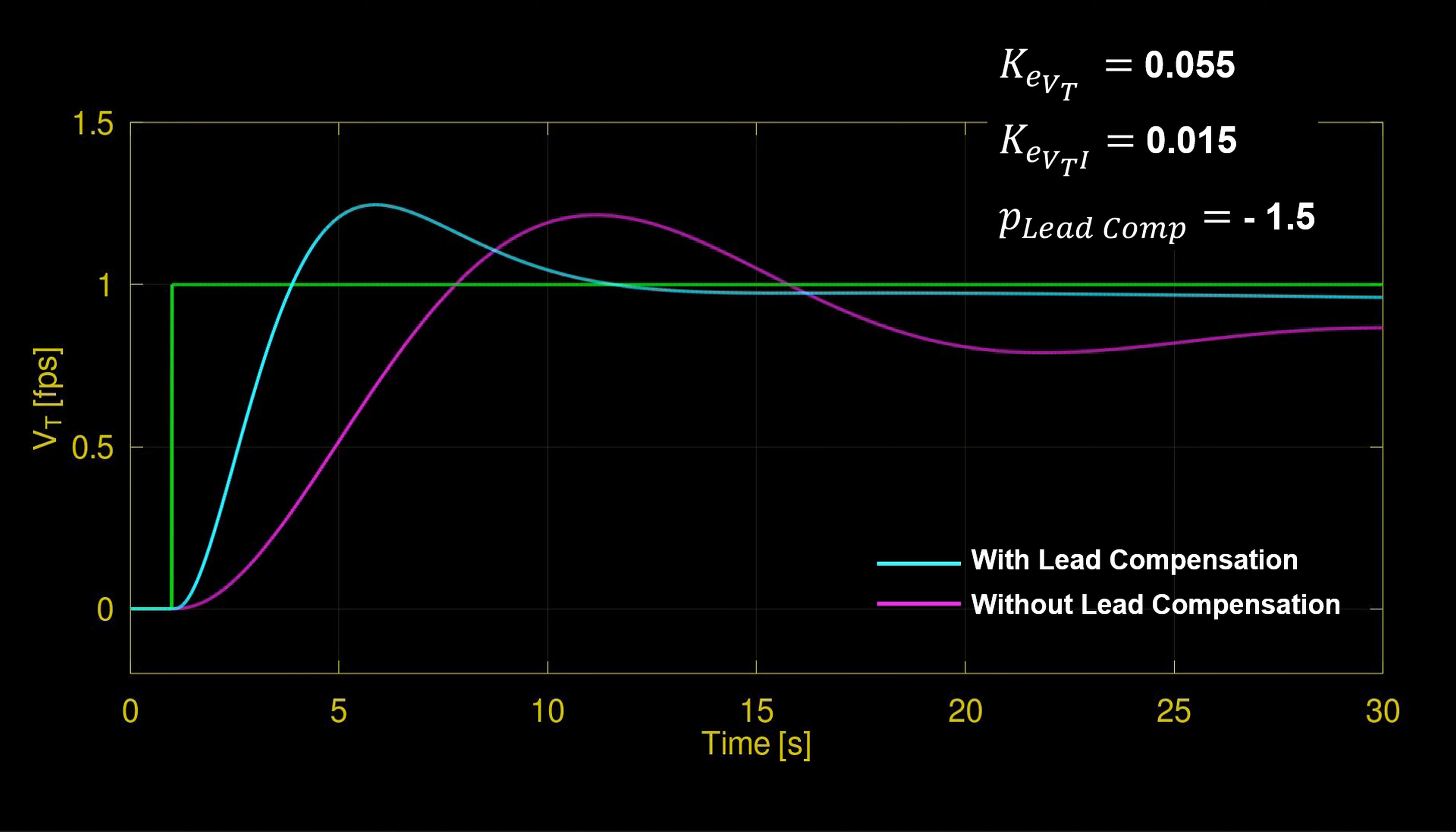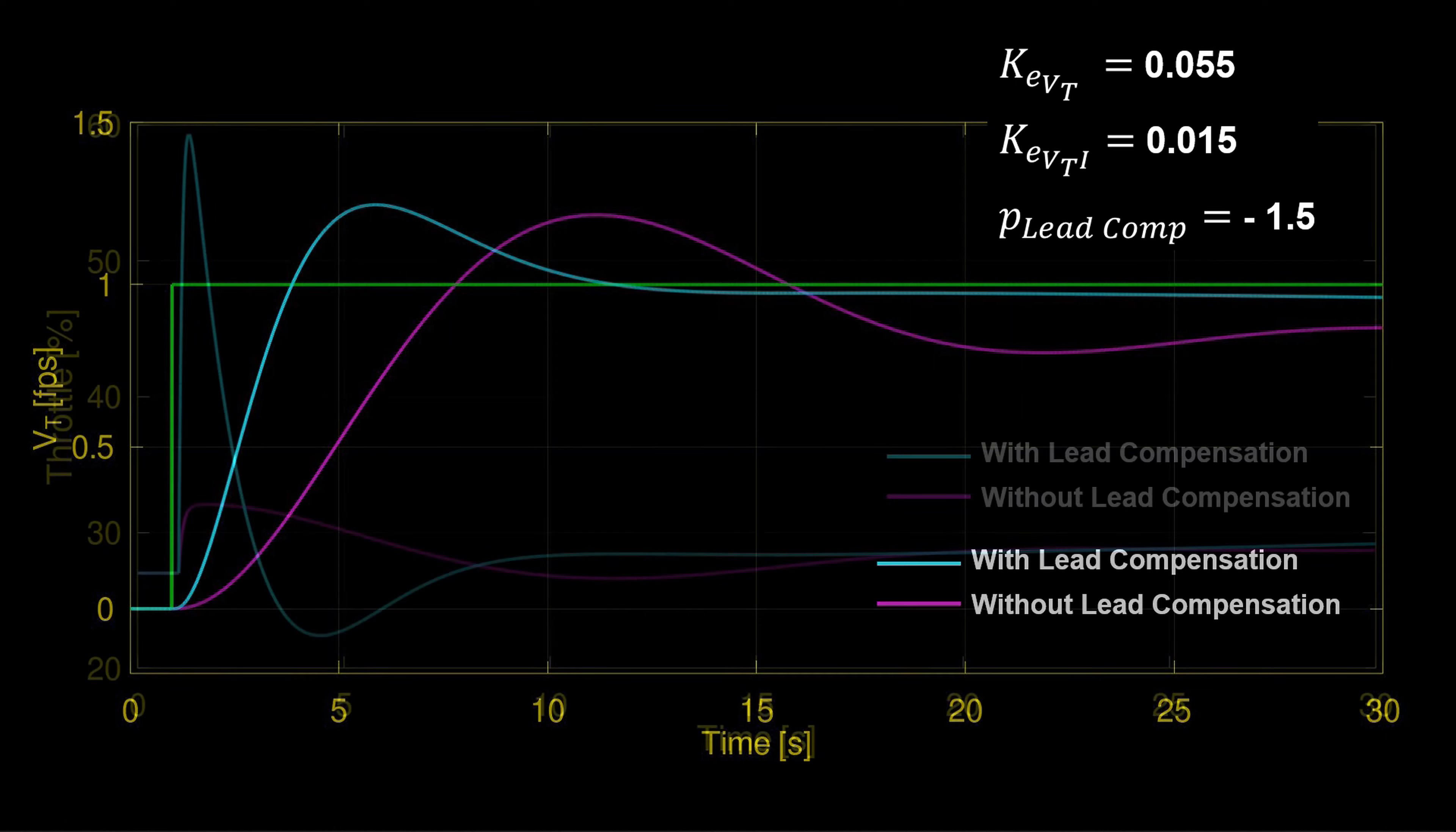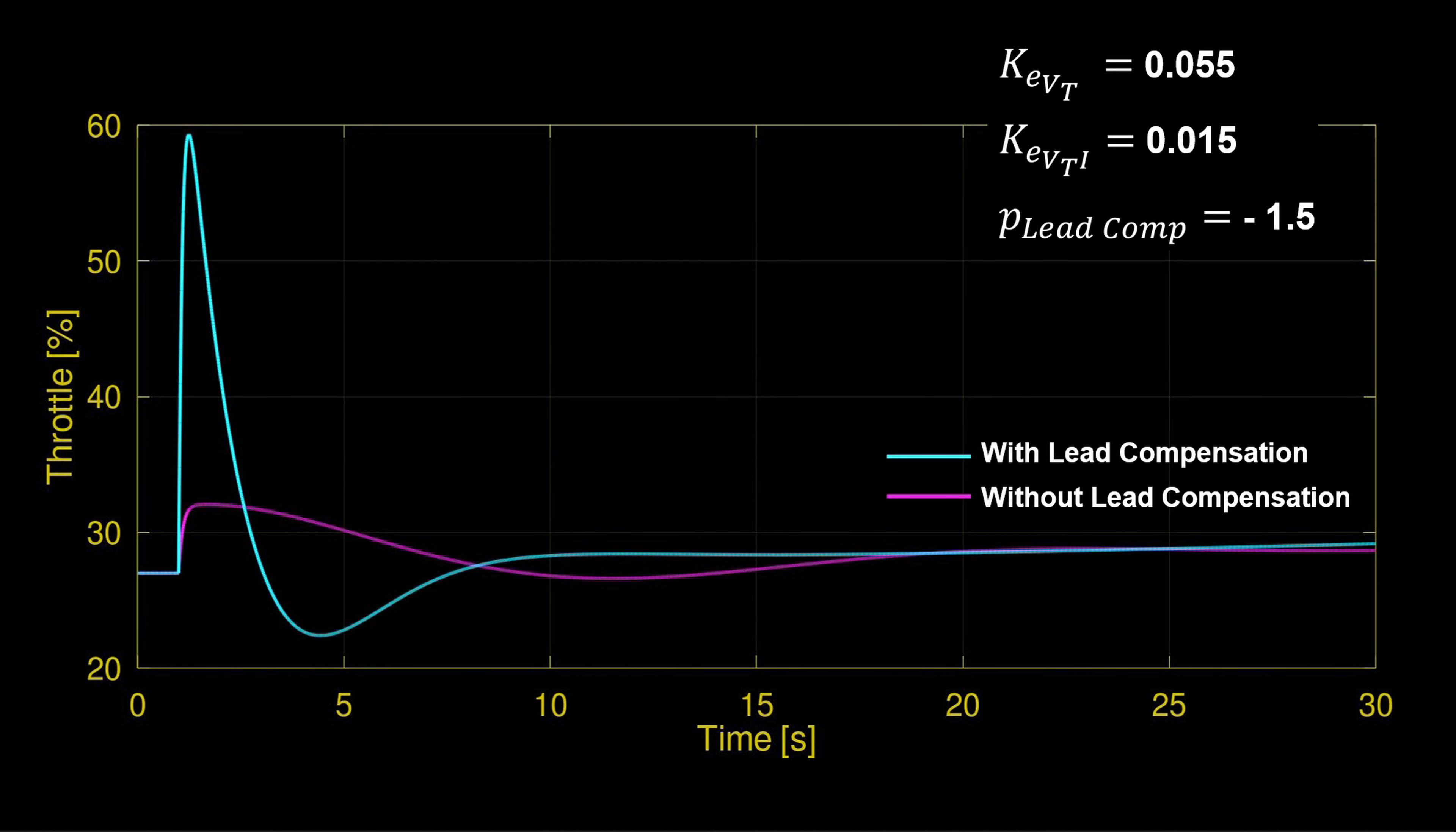So, we back off the gain slightly and bring the lead compensator pole in to minus 1.5. We accept larger overshoot, larger rise time, but still greatly outperform the uncompensated system. And adjusting the performance lower, naturally we use less throttle. This still may not be acceptable, but it's a step in the right direction to avoid engine saturation. We'll use the nonlinear simulation to guide future tuning.